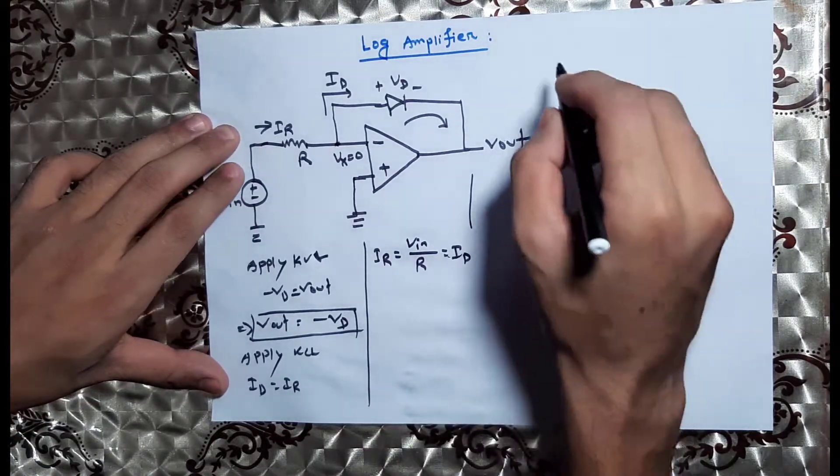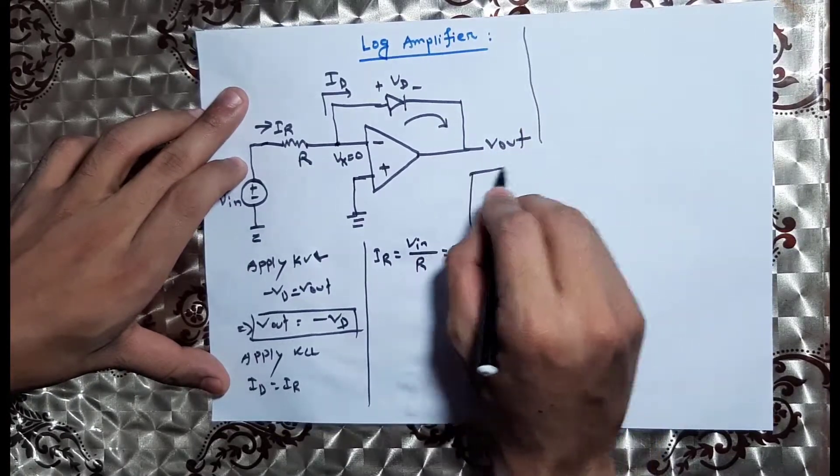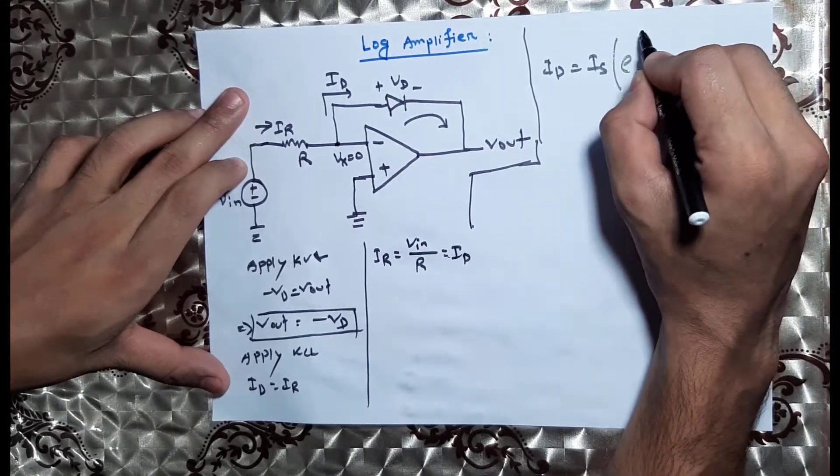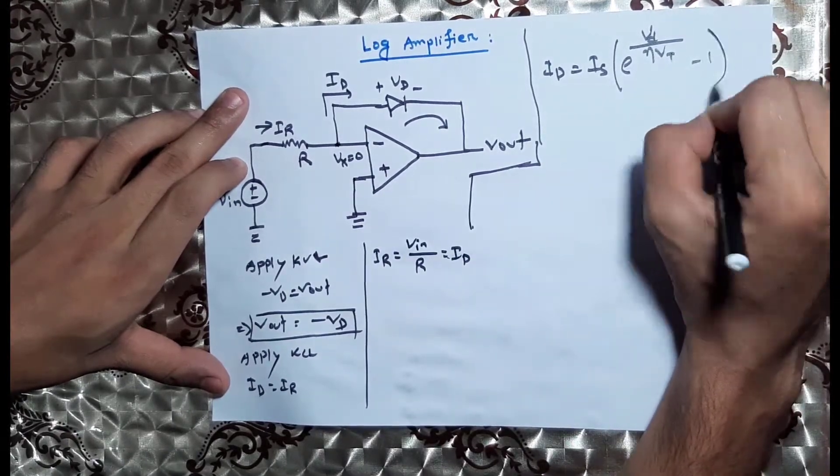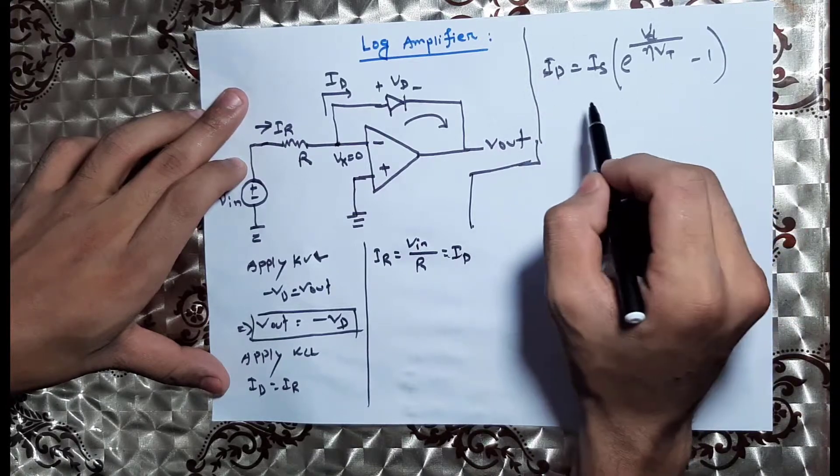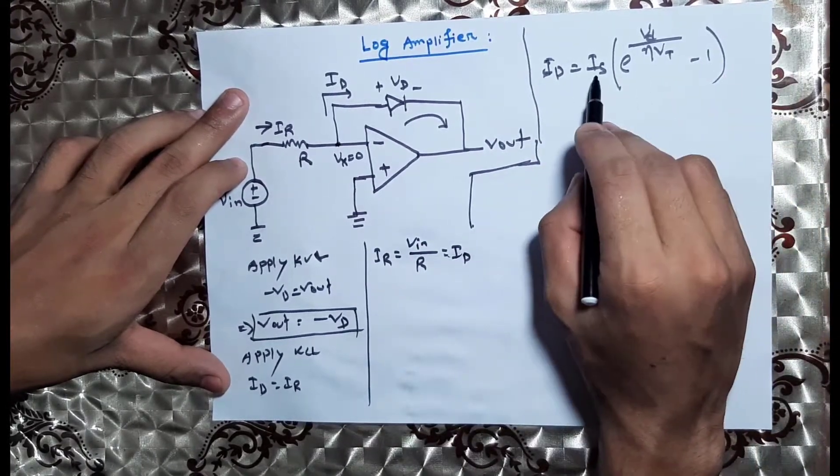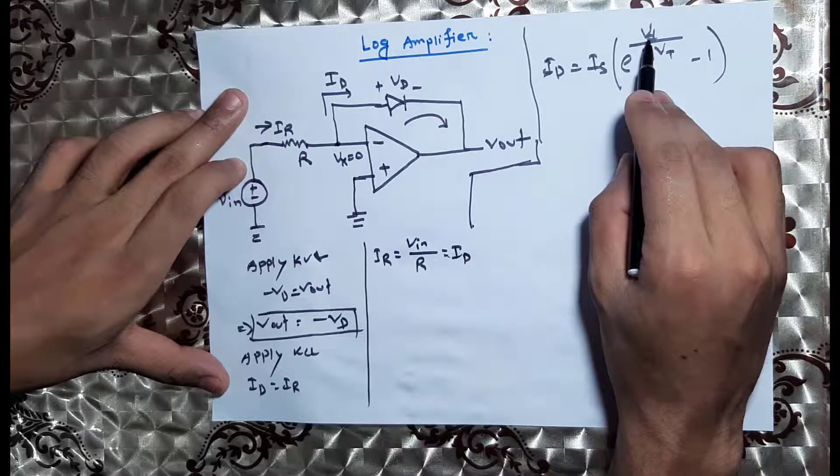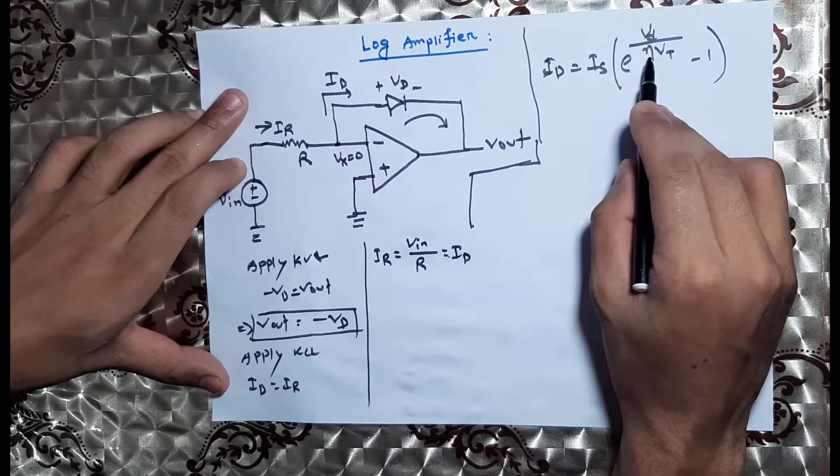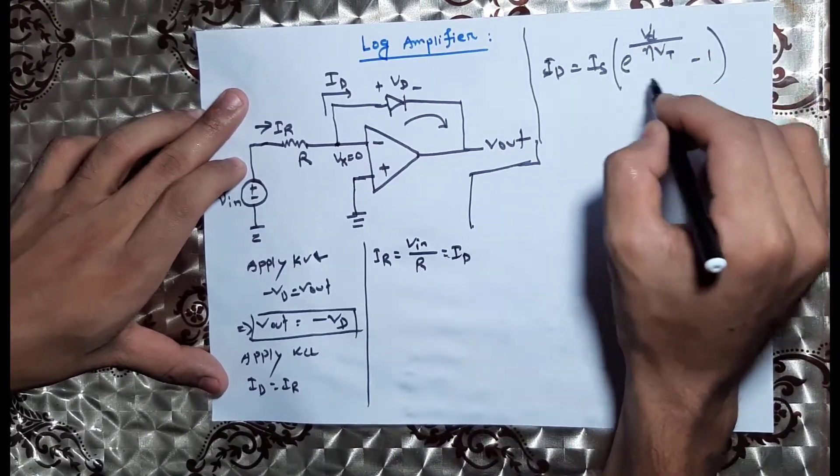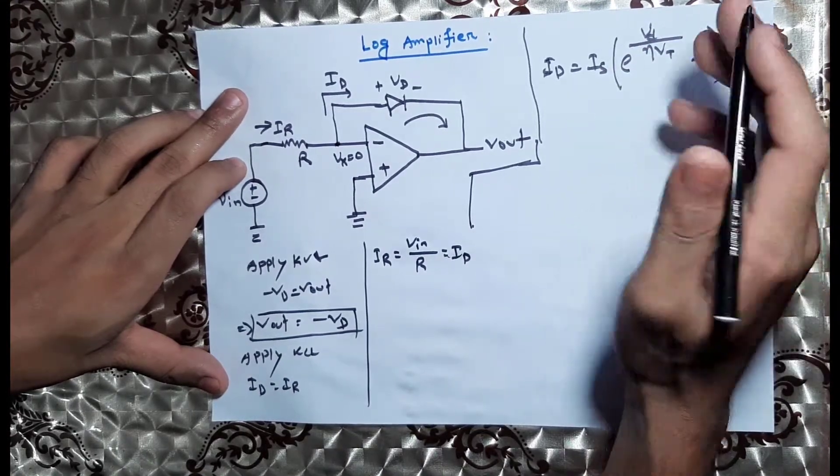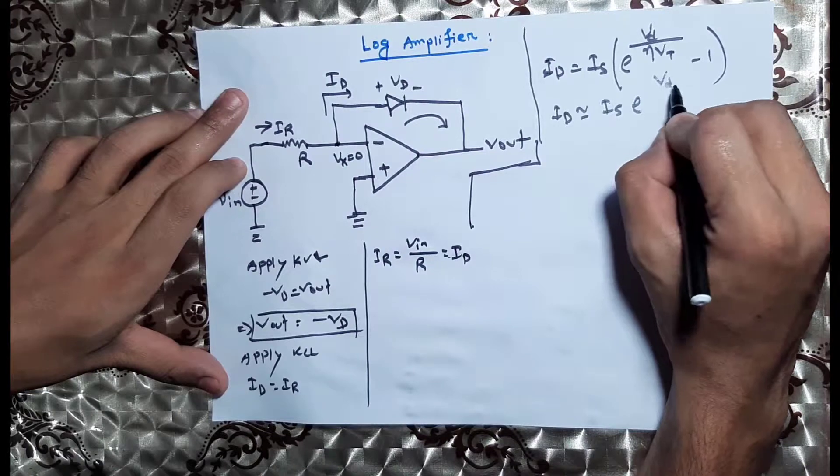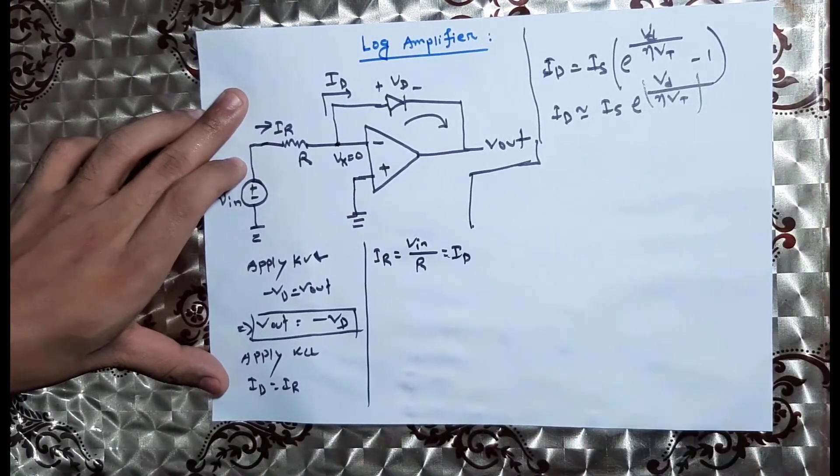The diode characteristic is ID equals Is times e to the power VD divided by eta VT minus one. When VD is much greater than one, ID approximately equals Is times e to the power VD divided by eta VT, where Is is saturation current, VT is thermal voltage, VD is forward voltage of the diode, and eta is the ideality factor.